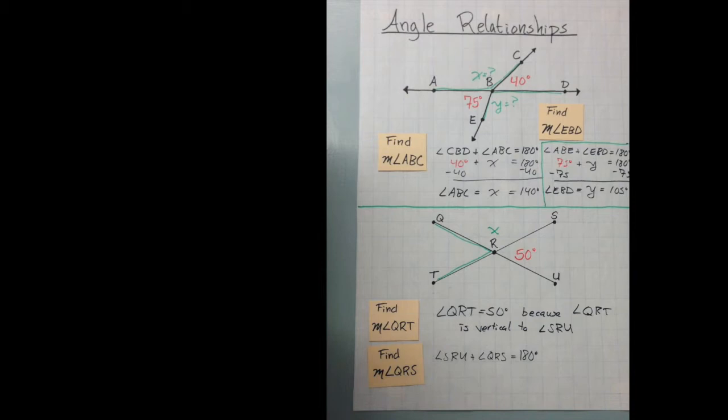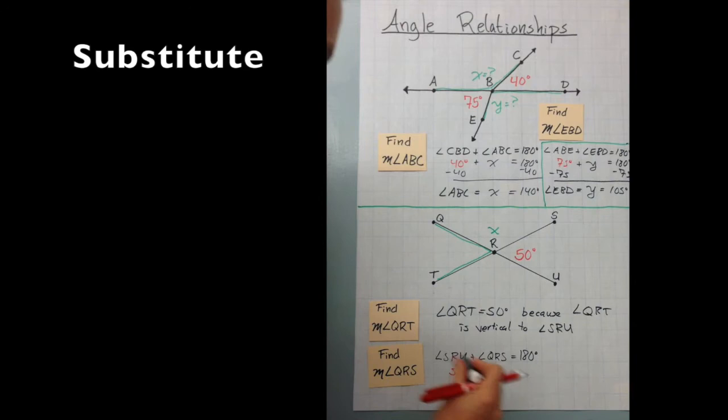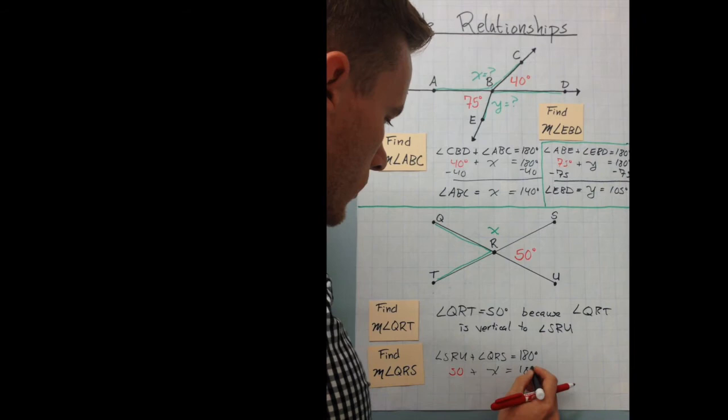So let's just plug and check. SRU equals 50. We already did this. We're experts at this. And QRS equals X because we don't know what it equals. So now we just, algebra, on stretch.